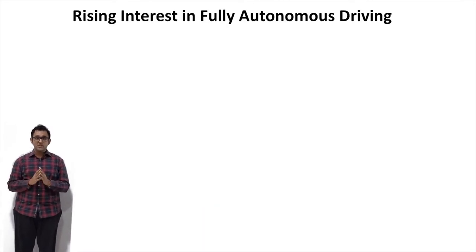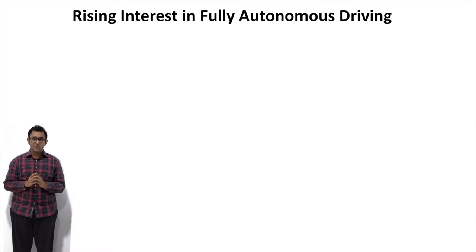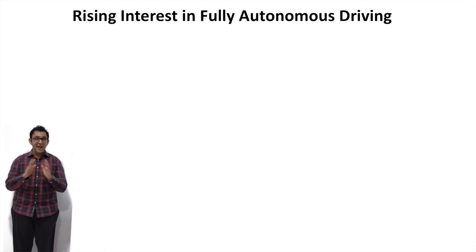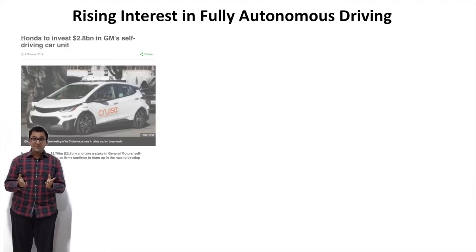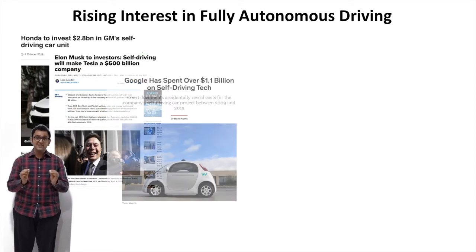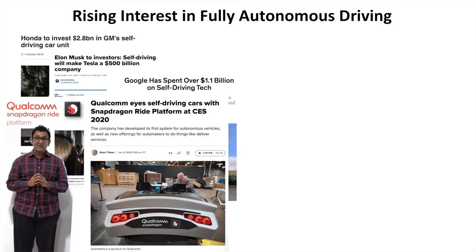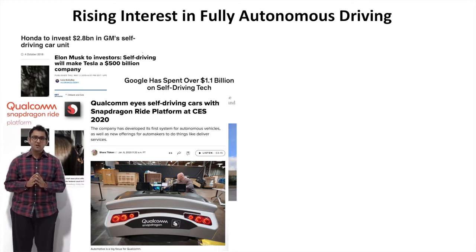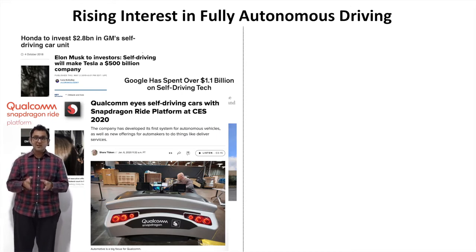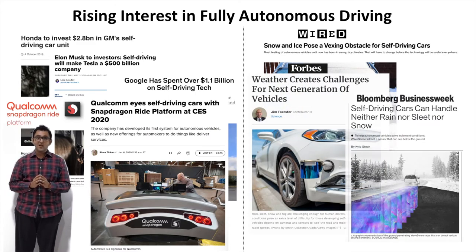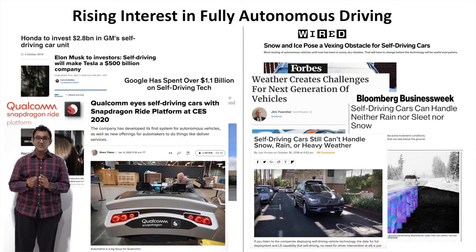There's a lot of interest in achieving the vision of full autonomy for self-driving cars, which means the car has to operate in any weather conditions. A lot of companies are investing billions in this market, and Qualcomm too is working in this space and has recently unveiled the Snapdragon Ride platform at CES. However, one of the biggest problems to achieving fully autonomous cars is that today's cars mainly rely on LIDARs and cameras for navigation, and these do not work in harsh weather conditions like dense fog.